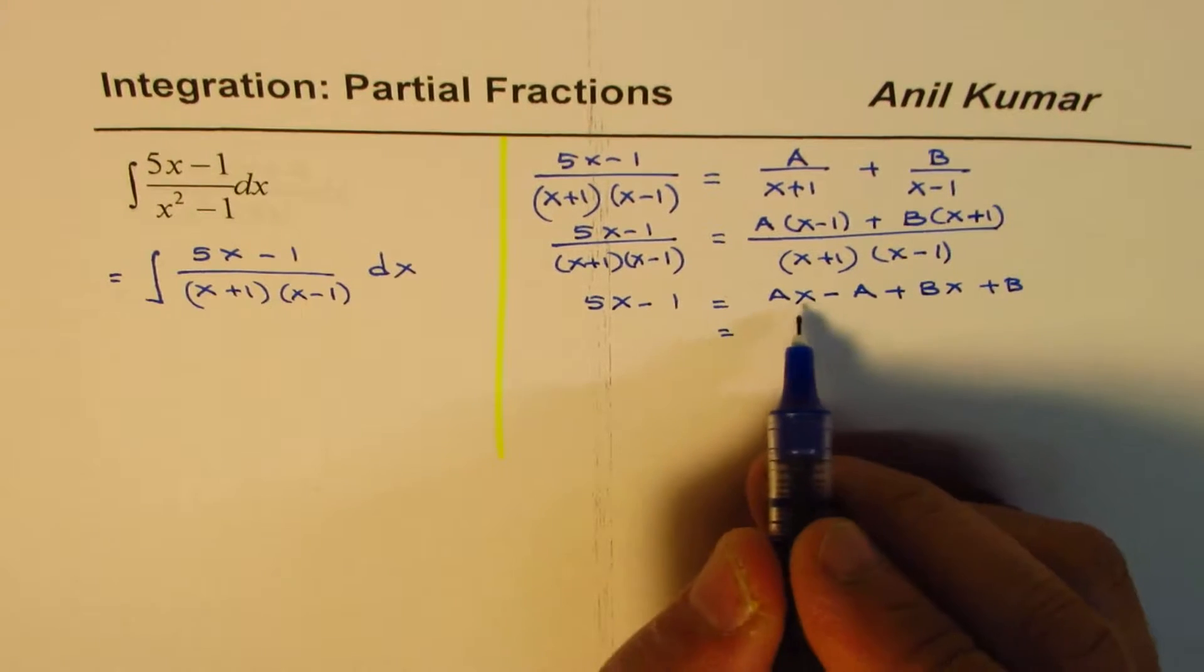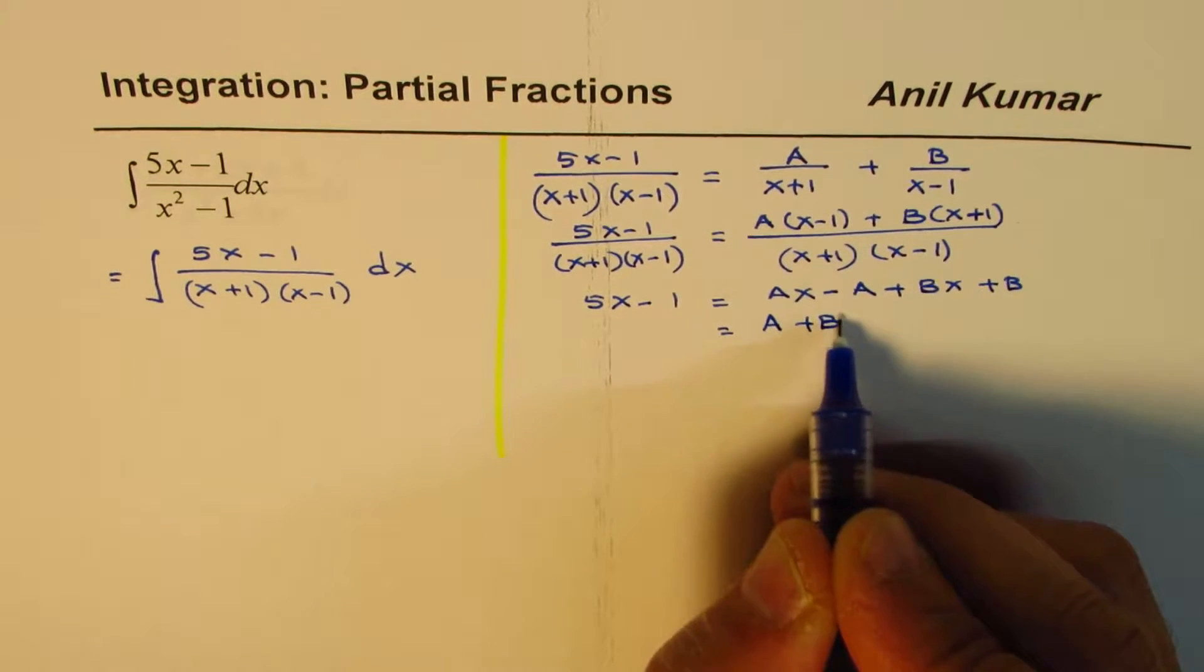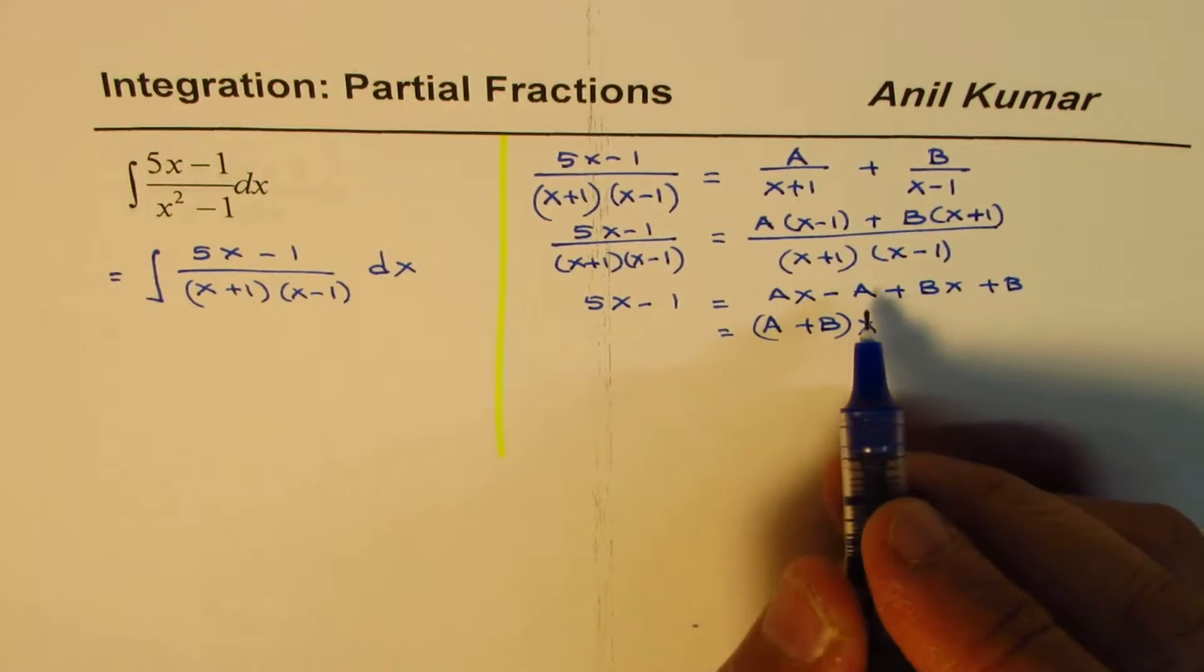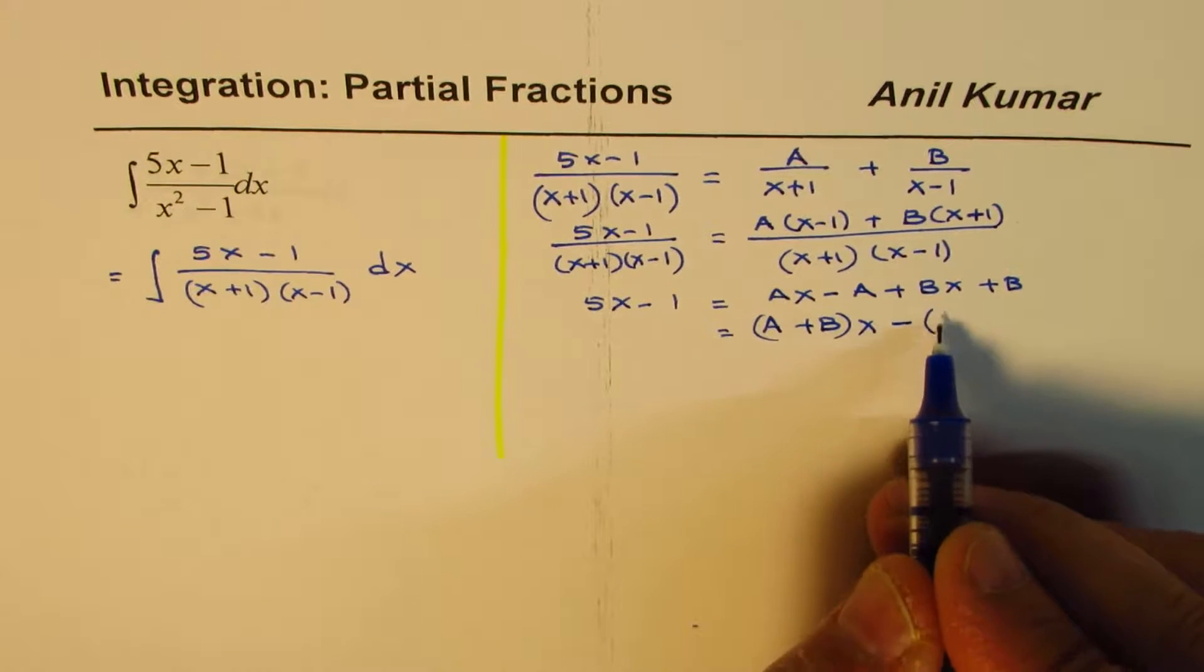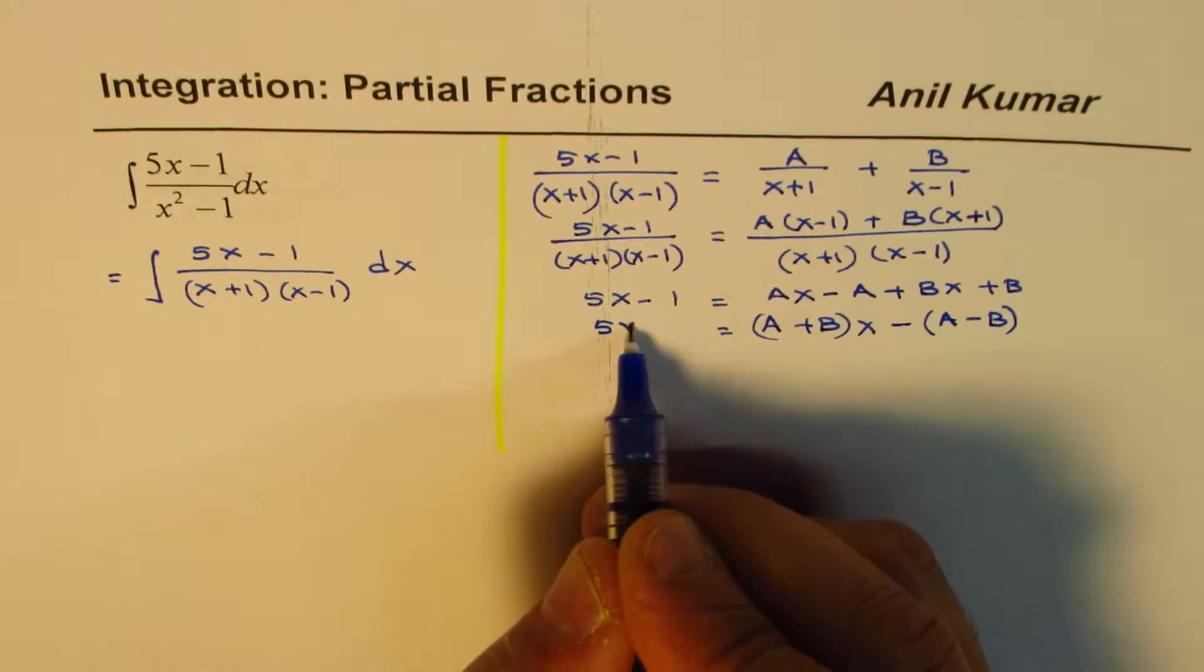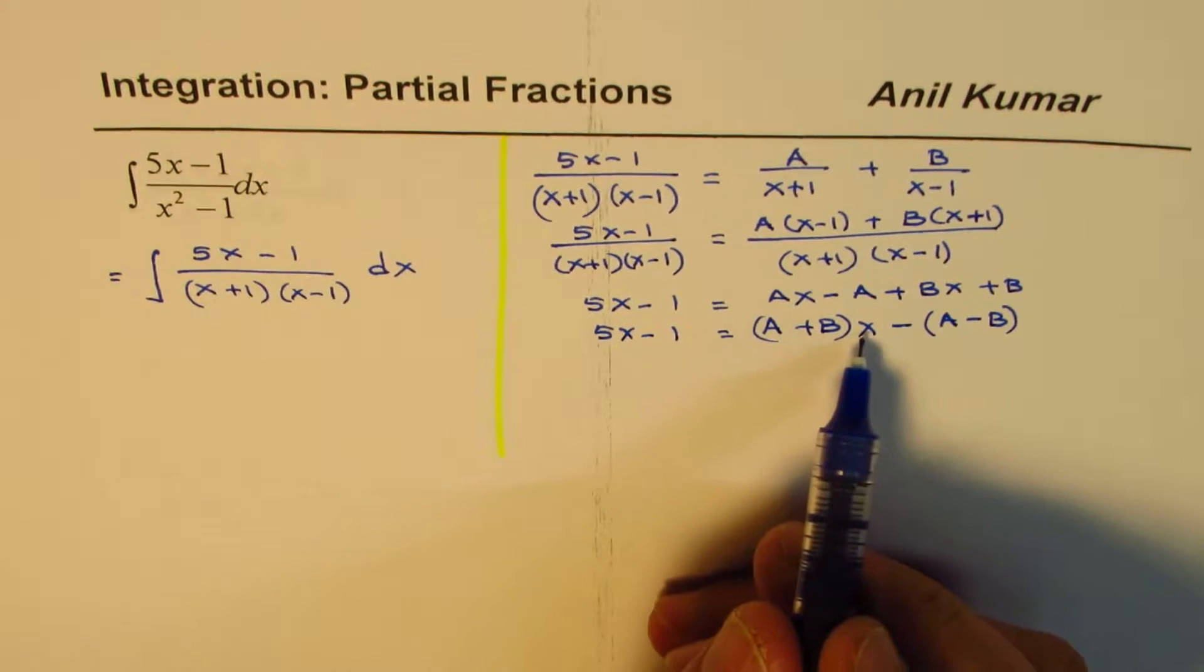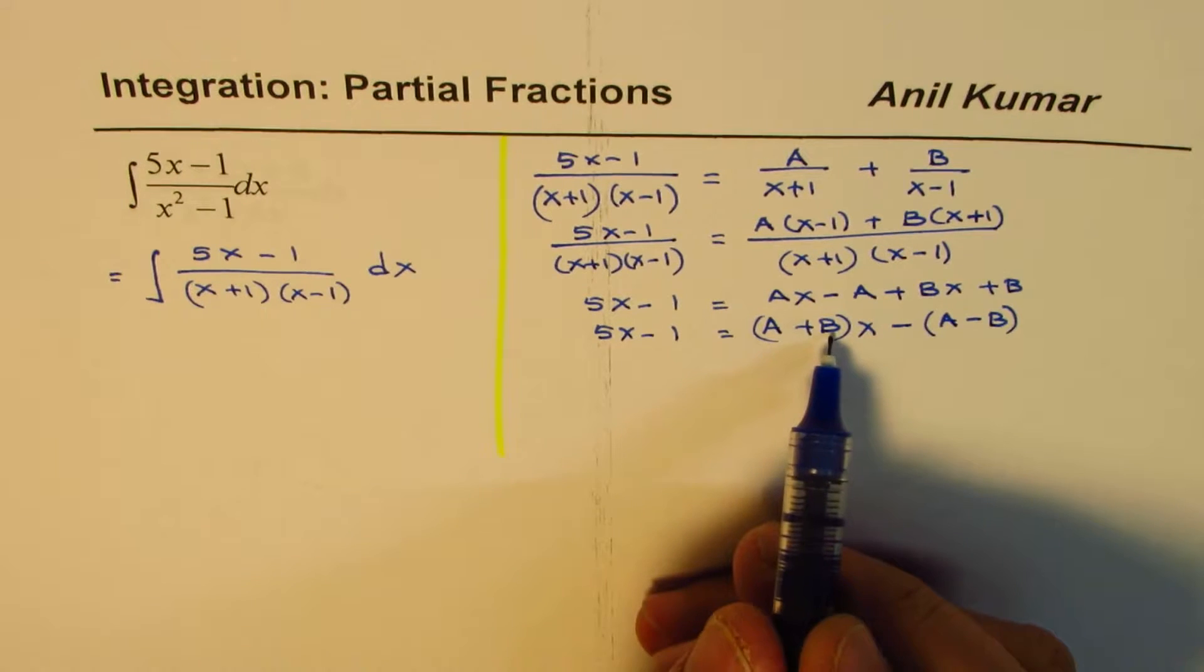Now, we can take x common, we get A plus B, x common, and then we have minus, and then we get A minus B. And on this side, we have 5x minus 1. Now, if you compare the coefficients of x, which is A plus B, it should be equal to 5.